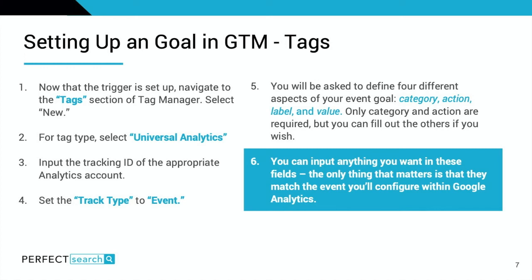Now that we have our variable and trigger set, it's on to tags. Navigate to the tags section of Tag Manager and select new. For the tag type, select Universal Analytics and input the tracking ID of the appropriate analytics account, similar to what we did in variables. Then set the track type to event. You'll be asked to define four aspects of your event goal: category, action, label, and value. Only category and action are required. As an agency, we typically only fill out category and action.